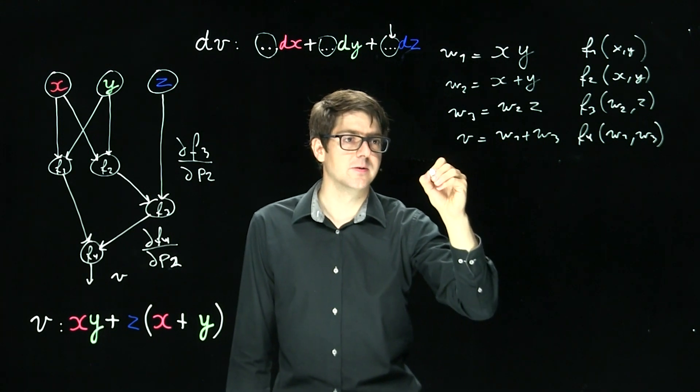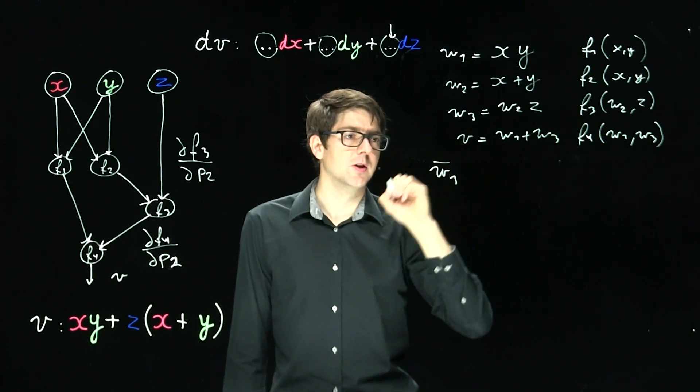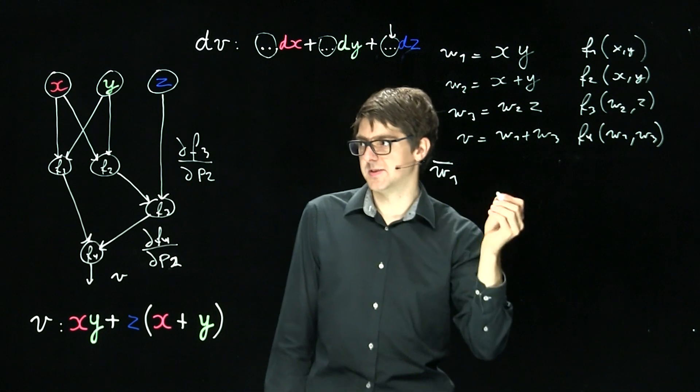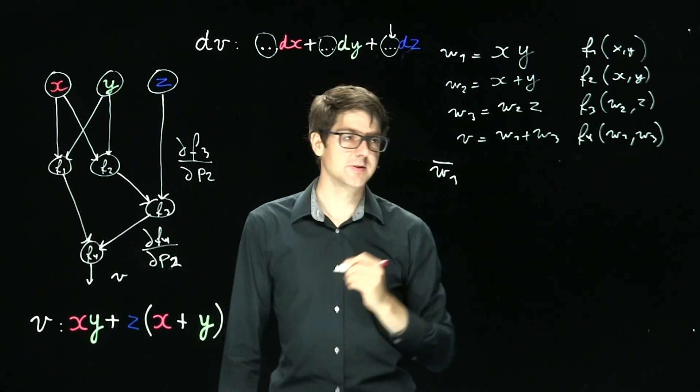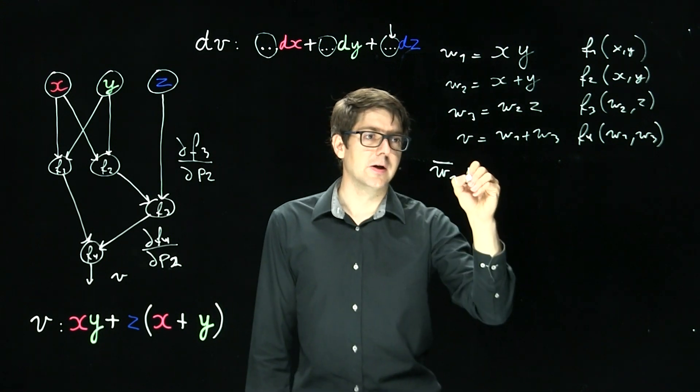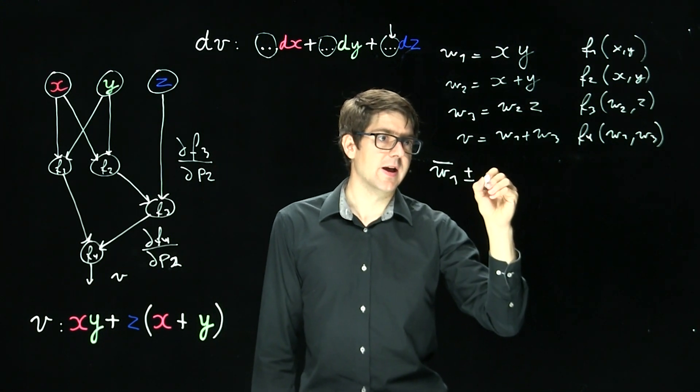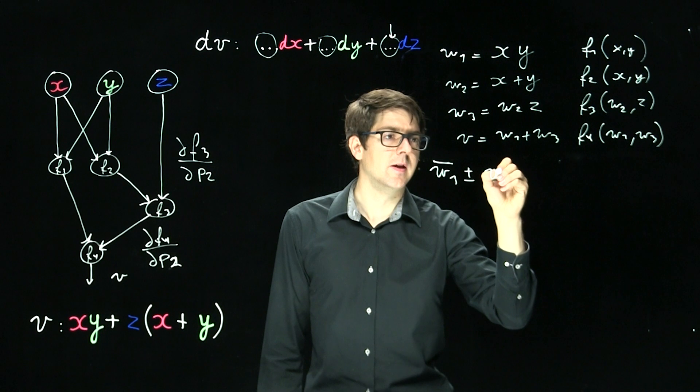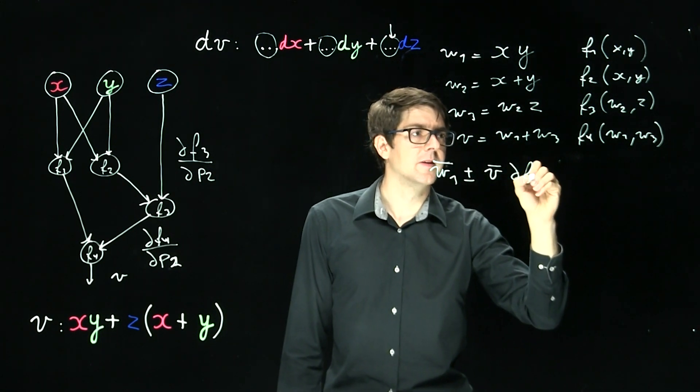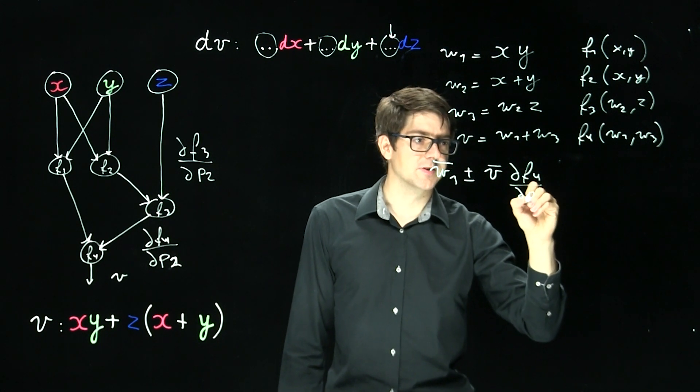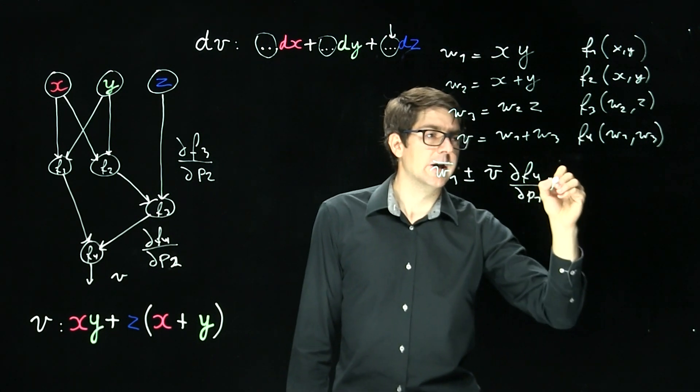So that's why we're going to say W1 bar, which is, as I said, a new intermediate variable that we can use in our algorithm.